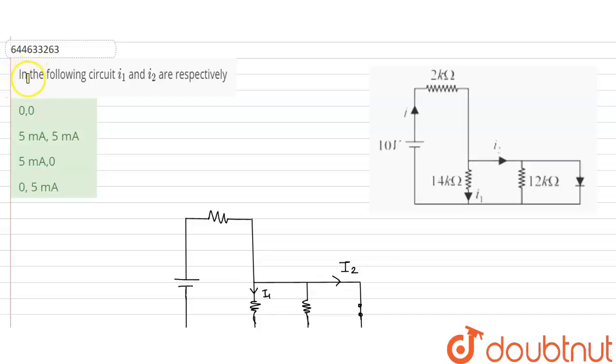Hello students, welcome to Doubtnet. Our question is: in the following circuit, i1 and i2 are respectively? So we have to find the value of i1 and i2. These are our given options.